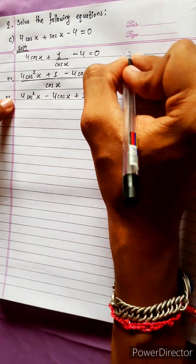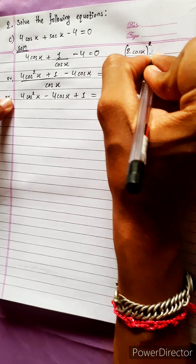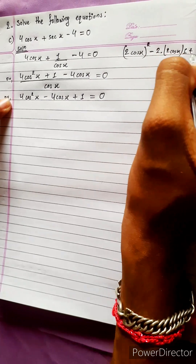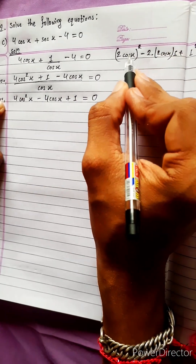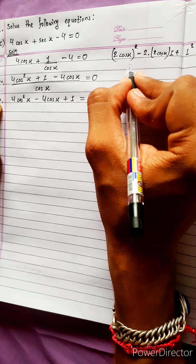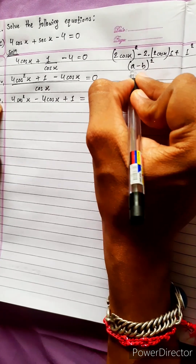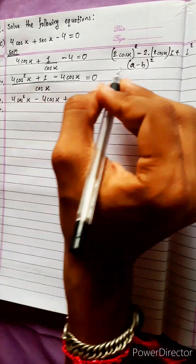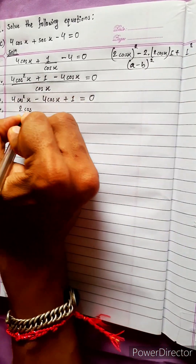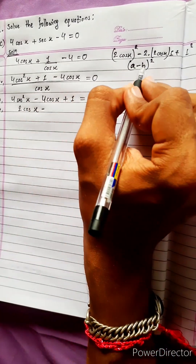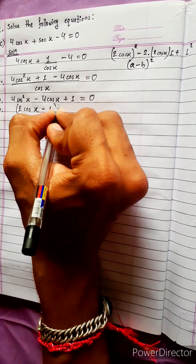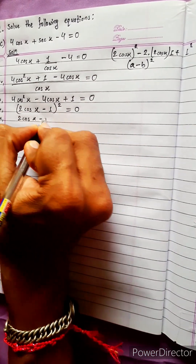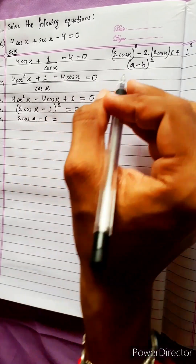We recognize this as a perfect square using the identity (a - b)² = a² - 2ab + b². Here a = 2cos x and b = 1, so (2cos x - 1)² = 0. Taking the square root gives 2cos x - 1 = 0.